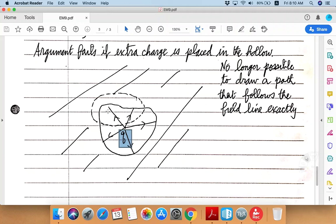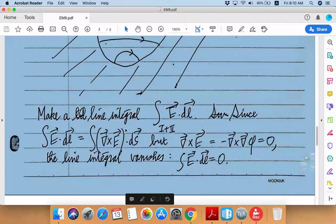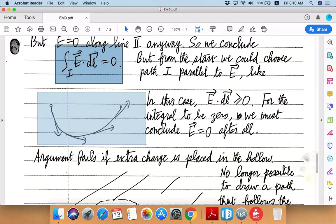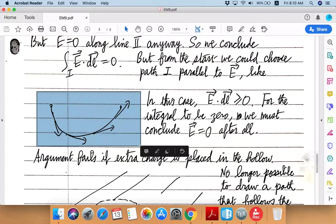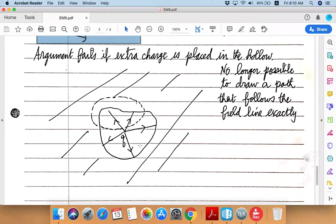And therefore it's impossible to draw a path which exactly follows these field lines due to isolated charge. So this assumption that we will be choosing the path that exactly follows the field lines of the electric field that exists on the interior in the hollow region—that assumption breaks down.